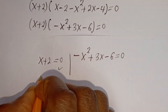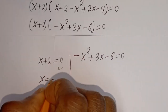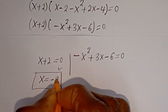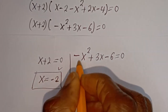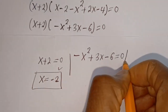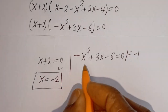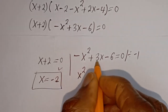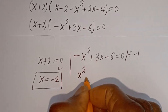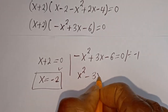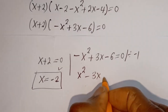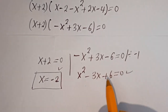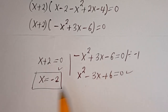From the first case, s is equal to minus 2. This is the first value of s. From the second case, we can divide all terms by minus 1: minus s squared divided by minus 1 is s squared, plus 3s divided by minus 1 is minus 3s, and minus 6 divided by minus 1 is plus 6, equal to 0. This is a quadratic equation. Let's solve this using the quadratic general formula.